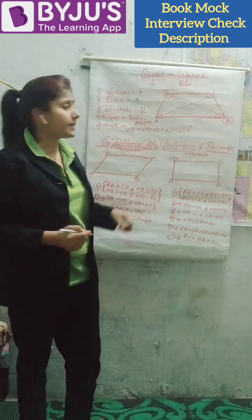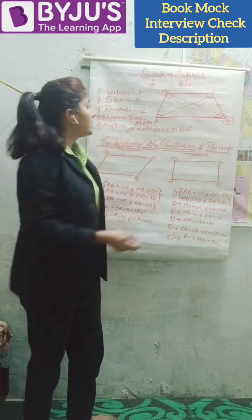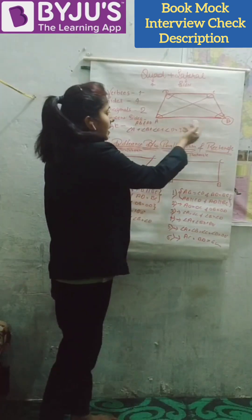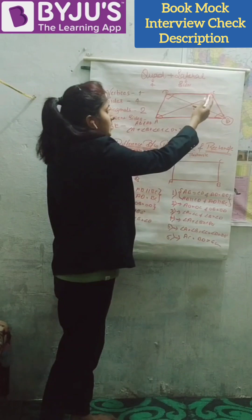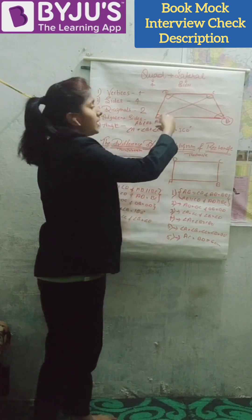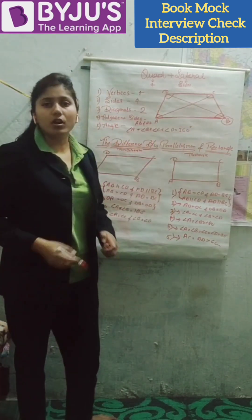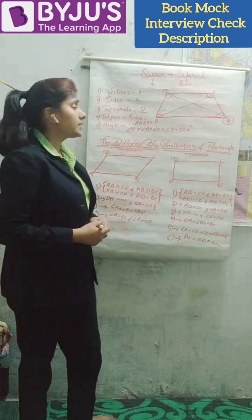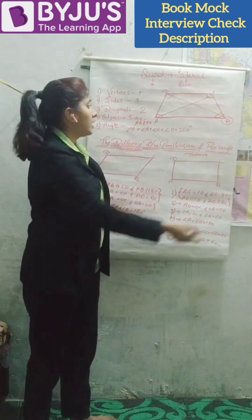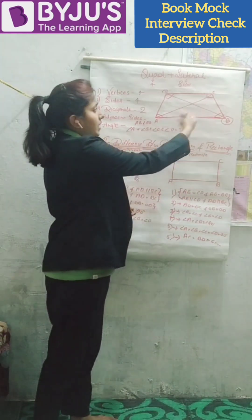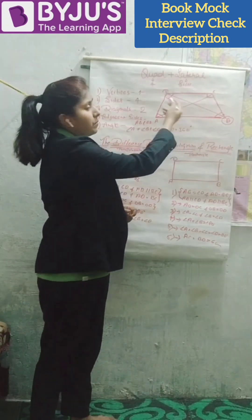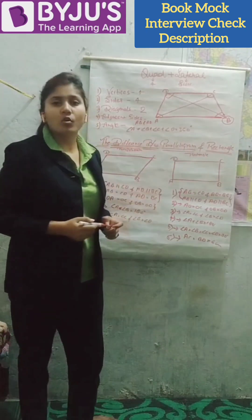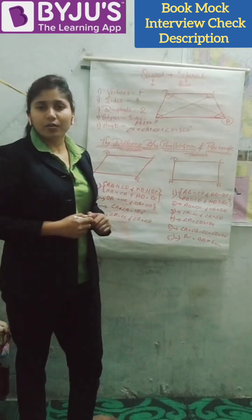Second is sides. The line segments AB, BC, CD, and DA are called sides. The third is diagonals. The line segments AC and BD are called diagonals.